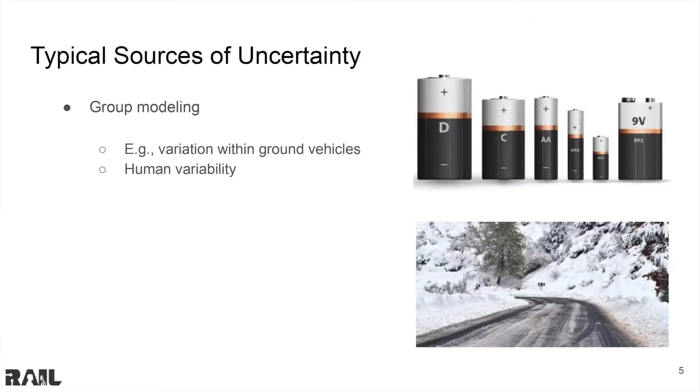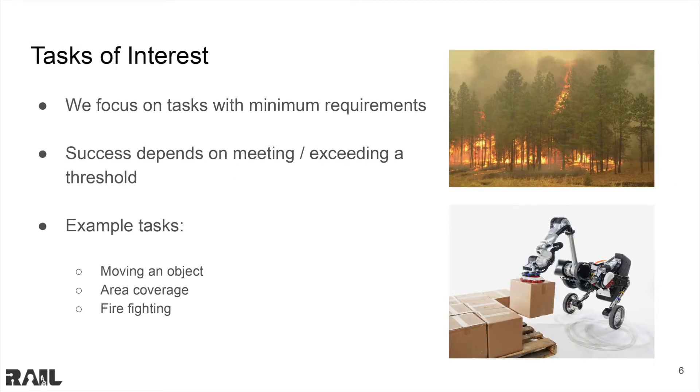Sources of uncertainty in agent trait include group modeling, where we model agents with slight variation in trait together. This could include robots with slightly different batteries or human variability. Also, a robot's environment can influence its trait expression. For example, bad road conditions could affect how quickly a robot can travel. Here, we are interested in tasks that require a minimum amount of trait. For example, moving an object will require a certain amount of strength, without which the object could not be moved.